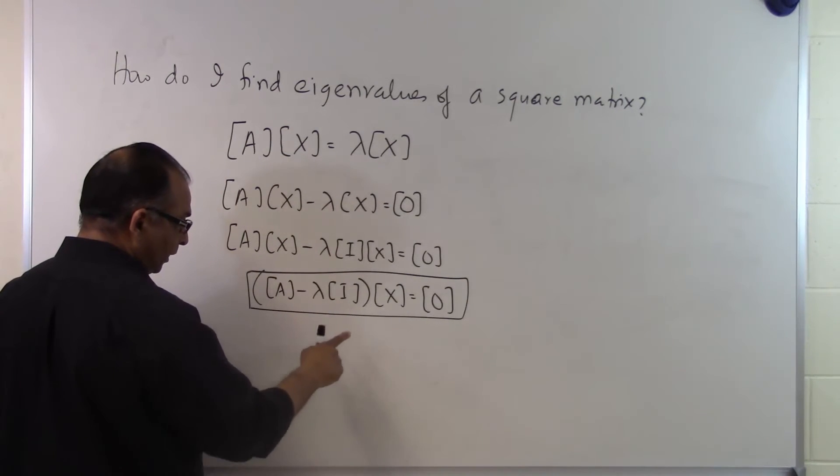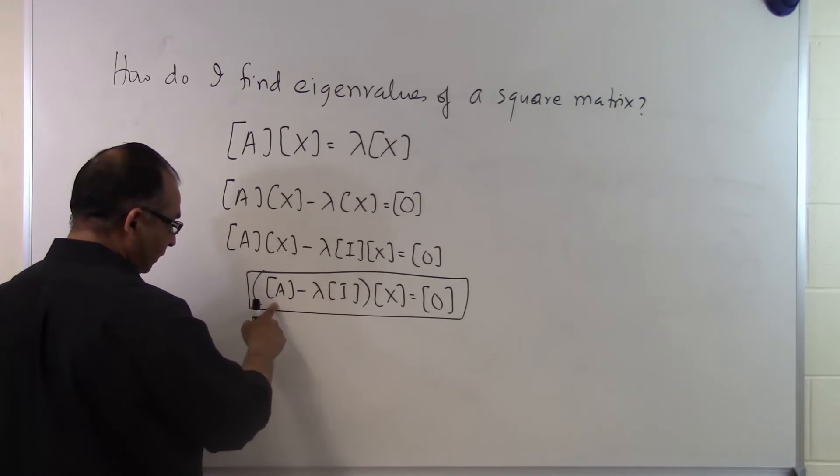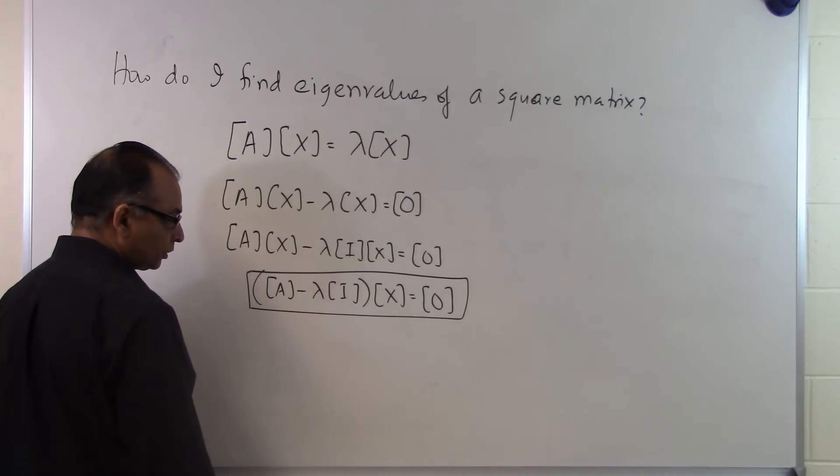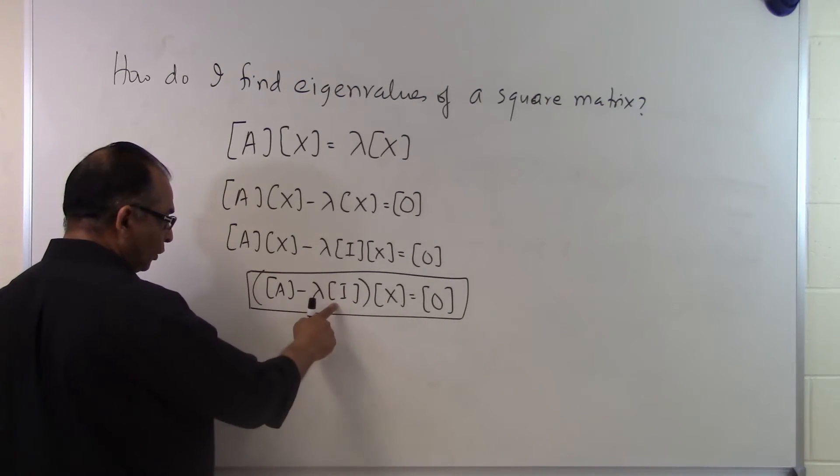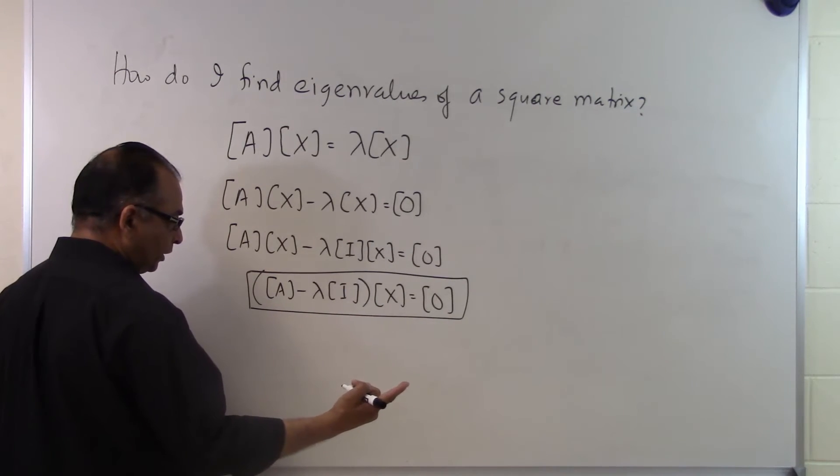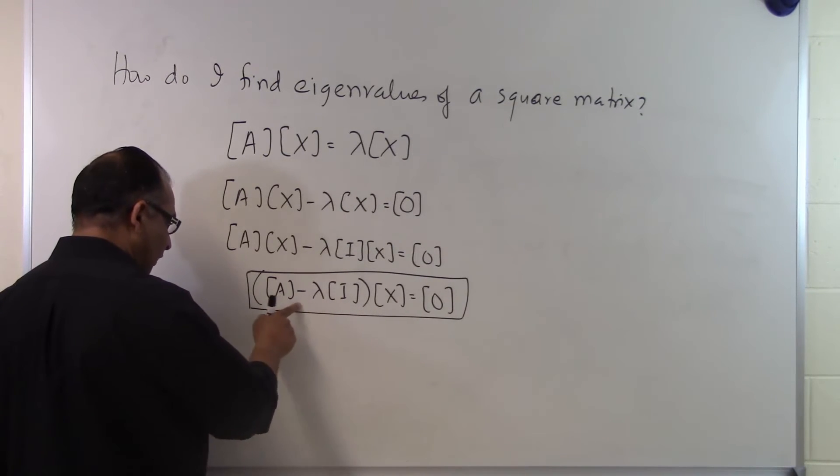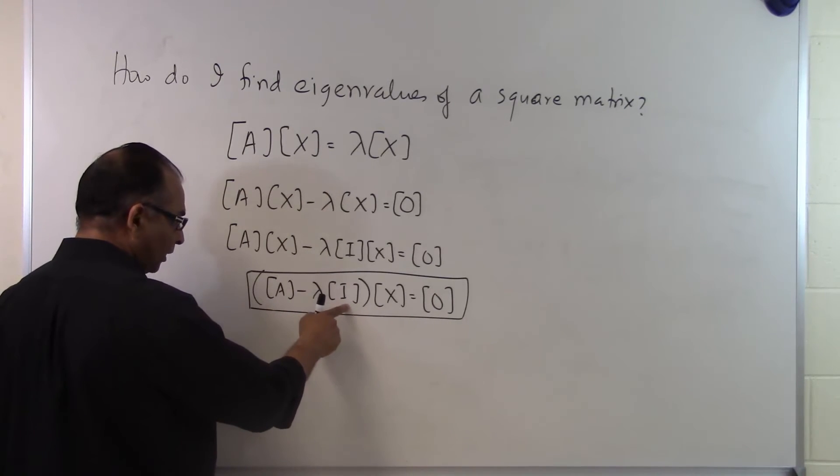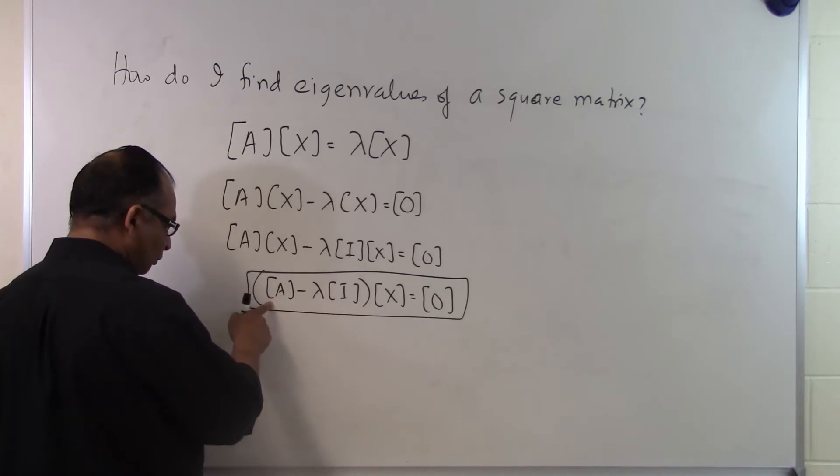So the only way it is possible is that this particular set of equations does not have a unique solution. Because if it had a unique solution, x equal to zero is one of the solutions, that would be the unique solution. So if we're saying this one does not have a unique solution, the only way that is possible is that this whole coefficient matrix, which is A minus lambda I, not just A, but A minus lambda I, will have to be singular.